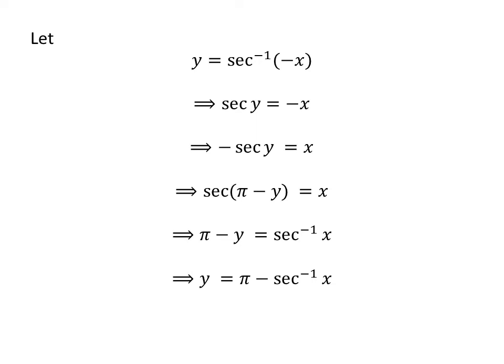Taking π to the right side, we get minus y is equal to arc secant of x minus π. Then multiplying the whole expression by minus one gives us y is equal to π minus arc secant of x.